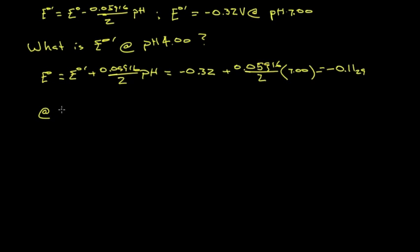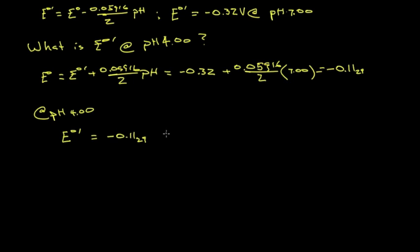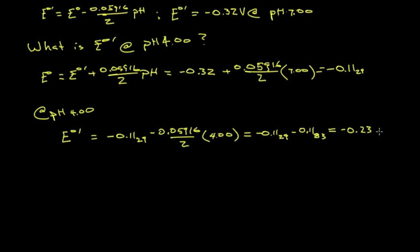So the standard state potential is negative 0.1129 volts. At pH 4.0, E0 prime equals minus 0.1129 minus 0.05916 over 2 electrons times the pH of 4, which gives us negative 0.213 volts.